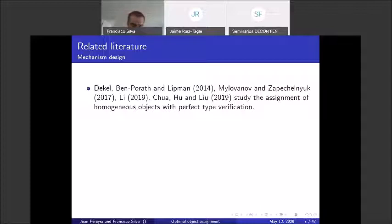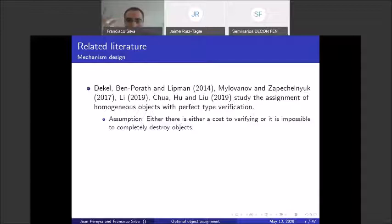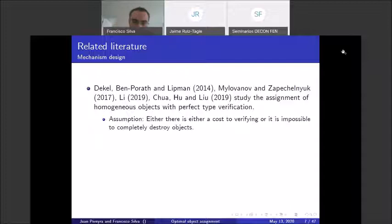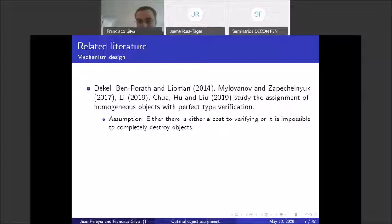Two literatures are relevant. The first is mechanism design without transfers, which looks at assigning homogeneous objects to agents assuming perfect type verification. Almost all papers in this literature assume a cost to verifying types so you can't verify everyone. The Myerson paper instead assumes it is impossible to completely destroy objects. In our case, there is no cost to verification and it is possible to completely destroy all objects, but our verification is imperfect.